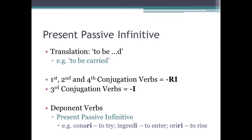Present passive infinitives. These are translated to mean 'to be something' — for instance, 'to be carried.' First, second, and fourth conjugation verbs form their present passive infinitive with the ending -ri. And third conjugation verbs end in just -i.